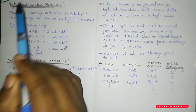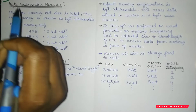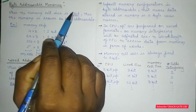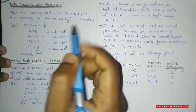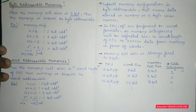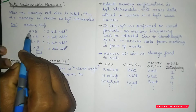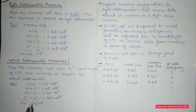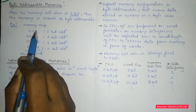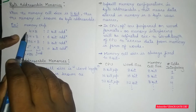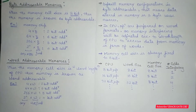Let's understand what byte addressable memories are. Here the word 'byte' means a collection of 8 bits. If we are processing data in memory in an 8-bit format, it is known as byte addressable. When the memory cell size is 8 bits, the memory is known as byte addressable. The memory chip configuration is represented with a multiplication sign between two parts — the left side is the number of cells, and each cell stores 8 bits. In all these examples, the cell size is fixed to 8.